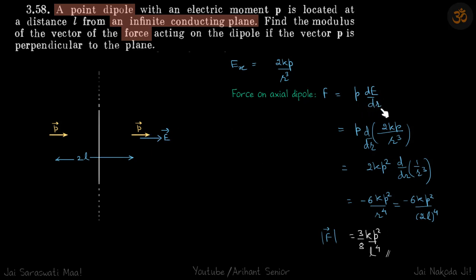So we'll put the electric field here and 2kp as constant will come out. So 2kp squared d by dr of 1 by r cube, which gives the answer.